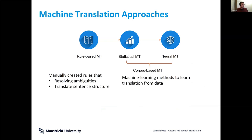The first approach to machine translation, which is quite old by now, is what we refer to as rule-based machine translation. The idea was that experts manually create rules for how to do the translation — essentially programming the system with rules describing how to resolve ambiguities to generate the correct translation.